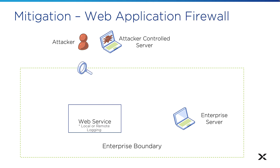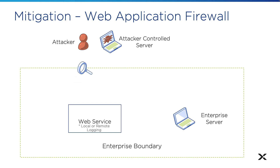The next line of defense is your border web application firewall. If you absolutely must expose services to the internet, a web application firewall inspects your incoming traffic and then filters out any of those JNDI payload attacks so that they never make it to the vulnerable service.